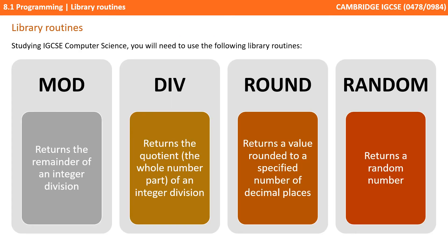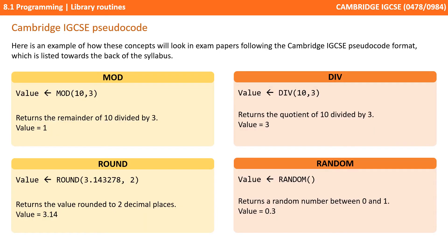You will need to use the following library routines in IGCSE Computer Science: mod, div, round, and random. We've looked at some of these already in previous videos. Here are some examples of these concepts as they will appear in the Cambridge IGCSE pseudocode format, which is listed towards the back of the syllabus.